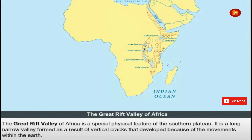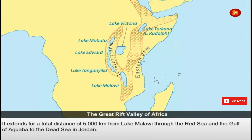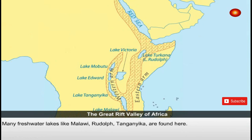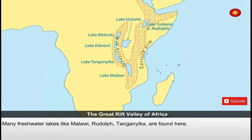The Great Rift Valley of Africa is a special physical feature of the southern plateau. It is a long narrow valley formed as a result of vertical cracks that developed because of the movements within the earth. It extends for a total distance of 5000 km from Lake Malawi through the Red Sea and the Gulf of Aqaba to the Dead Sea in Jordan. Many freshwater lakes like Malawi, Rudolph, and Tanganyika are found here.